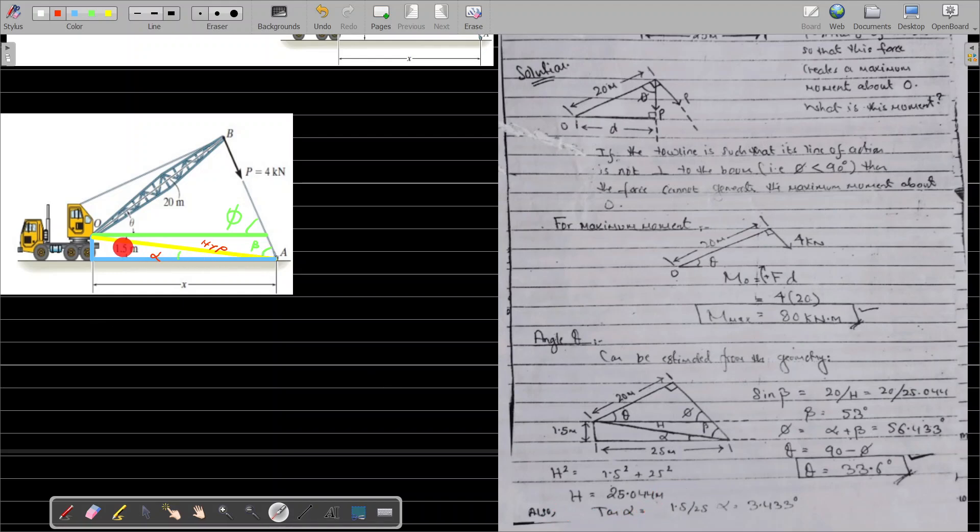We can calculate alpha: tan of alpha is opposite over adjacent, which is 1.5 meters over 25 meters. It's a very small value—we get alpha equals 3.433 degrees.